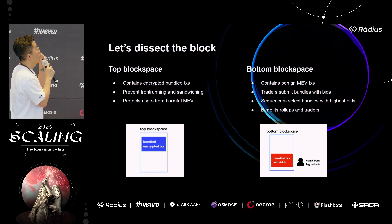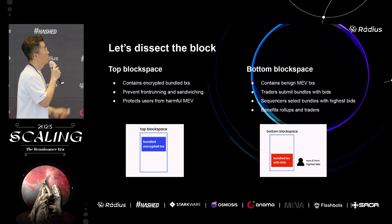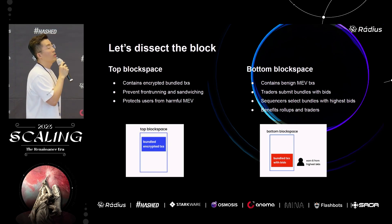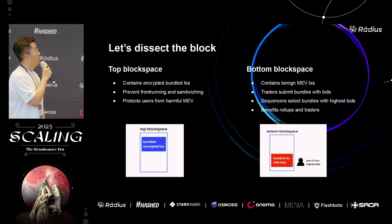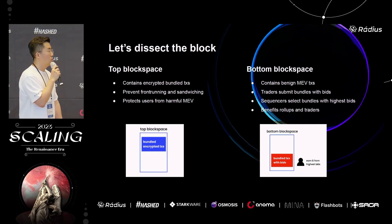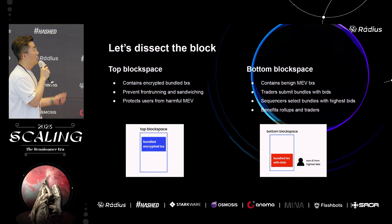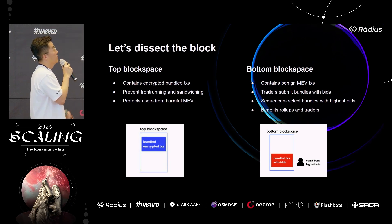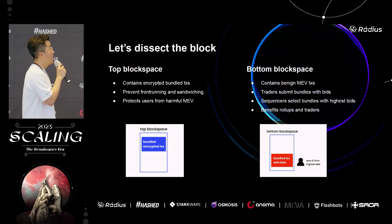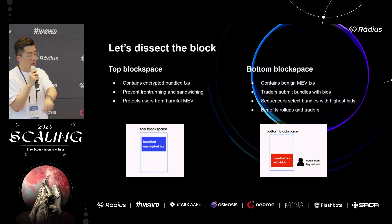Here are some details on the block structure. We have two parts of a block. The top block space contains encrypted bundled transactions, protected from harmful MEV — preventing front-running and sandwich attacks so users don't need to worry about those. The bottom part of block space contains benign MEV transactions, from which rollups can make profit. Traders search for benign MEV opportunities and submit bundles with bids, and these bids are distributed to rollups, ensuring great economic sustainability.